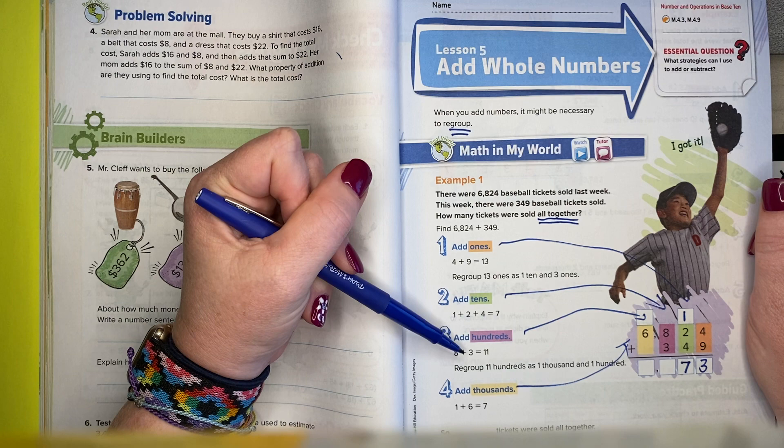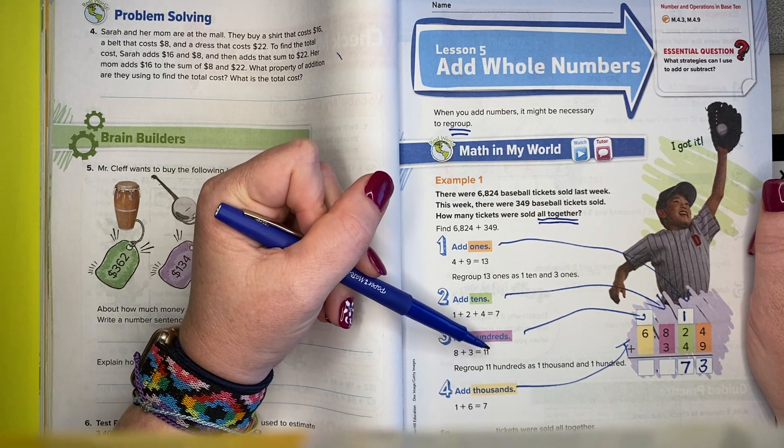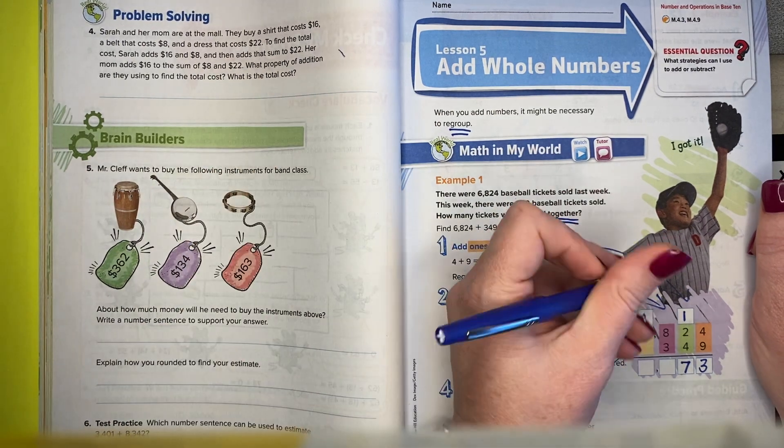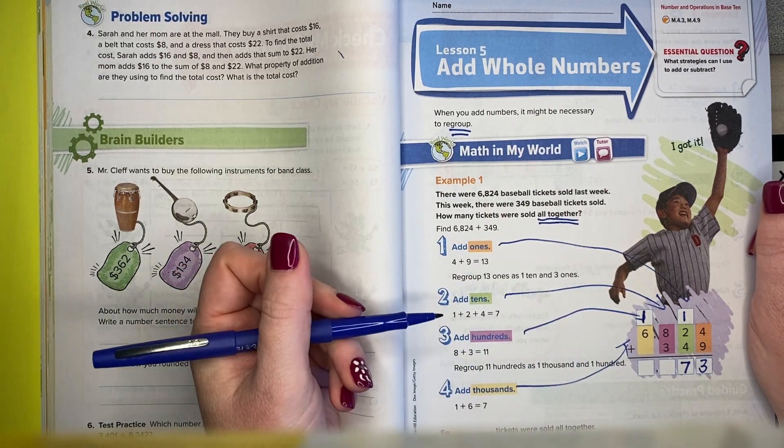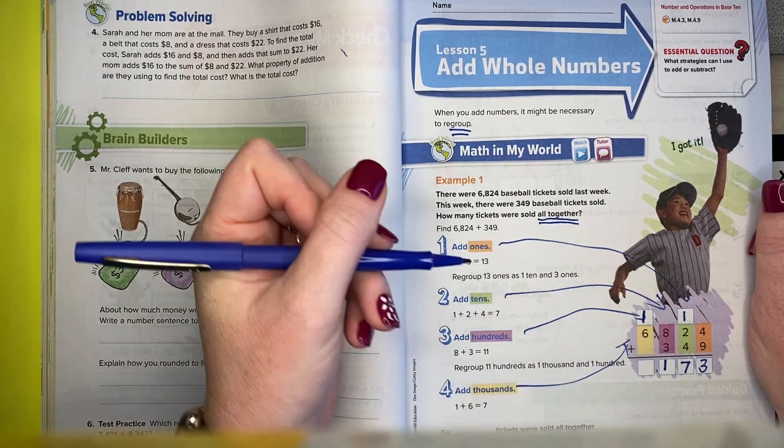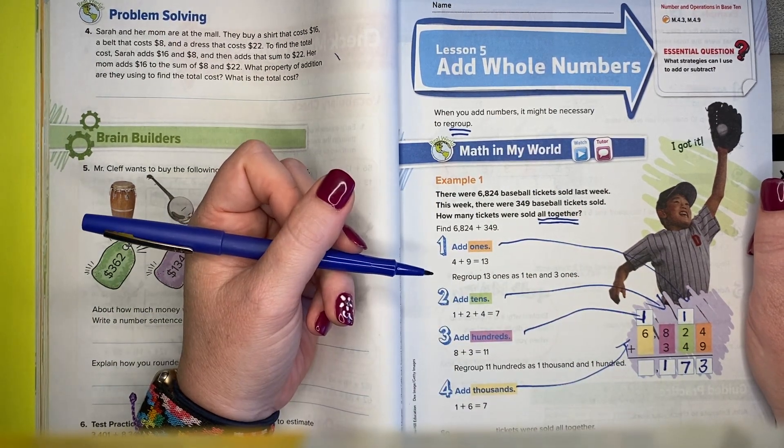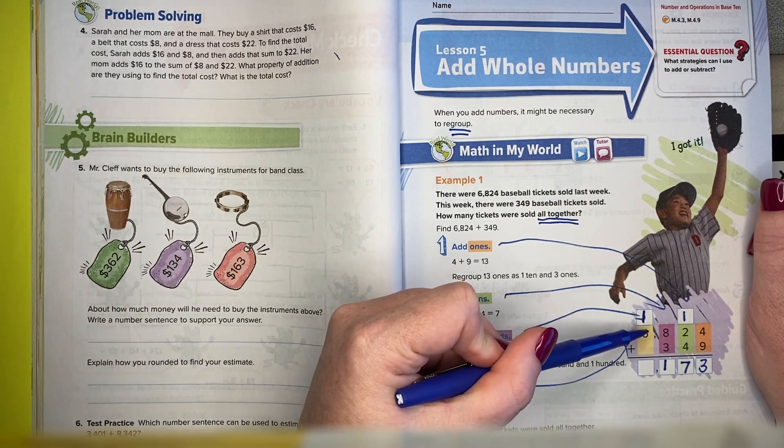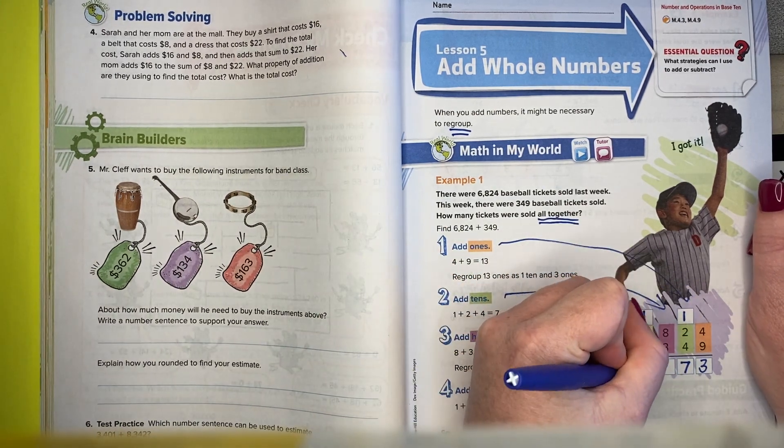Then I'm going to add the hundreds. I'm going to add 8 plus 3, which is 11. I'm going to regroup that, the 1 from the 11 up here and put the 1 that's in the ones place of it down here. Then I have to add 1 plus 6, and I get 7.